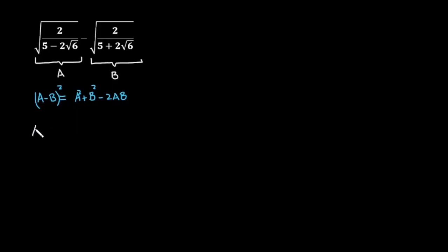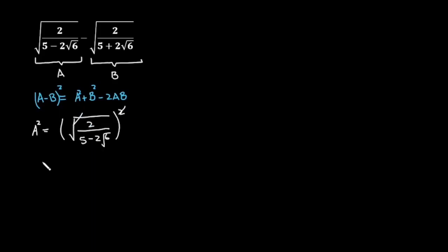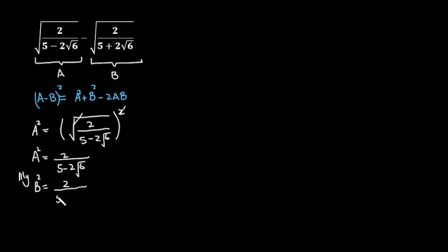Let us find the value of a squared first. So a squared is equal to 2 over the square root of (5 minus 2 times square root of 6), squared. The square and the square root cancel, so a squared equals 2 over (5 minus 2 times square root of 6). Similarly, the value of b squared is equal to 2 over (5 plus 2 times square root of 6).